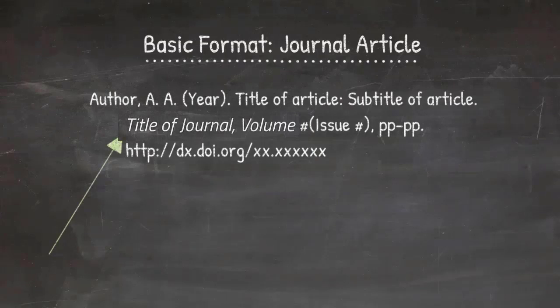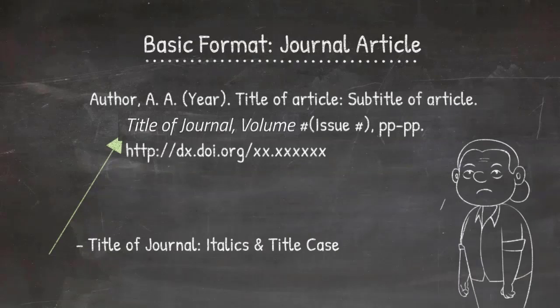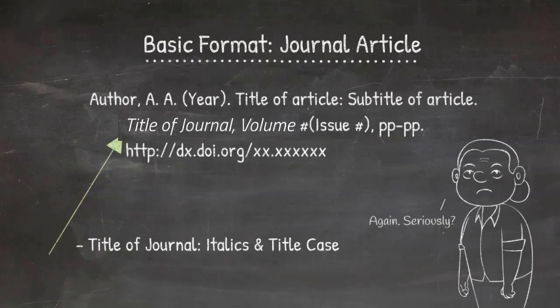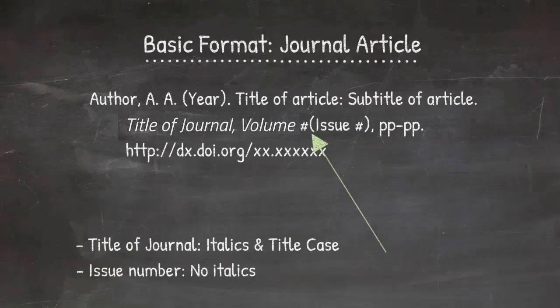The title of the journal is a little bit different — it's in italics and you use title case. So in the example on screen, 'Title of Journal,' the J in 'Journal' is purposefully capitalized. Follow that with a comma, still in italics. Then the volume number follows and that's also in italics. After that, with no space, the issue number in parentheses immediately follows the volume number, and the issue number is not in italics.